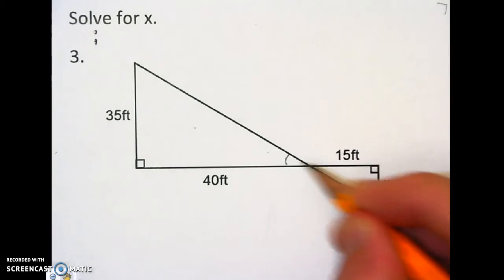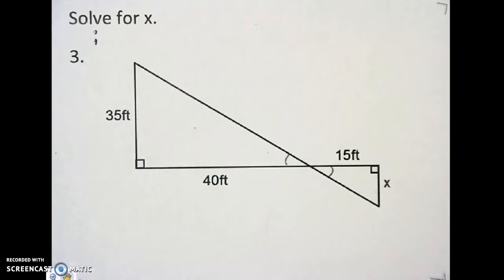I know these are vertical angles, and they are congruent. So now I have two 90s and two verticals. So I know these are similar triangles.